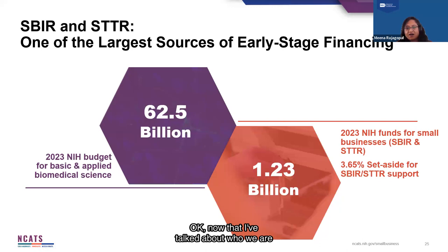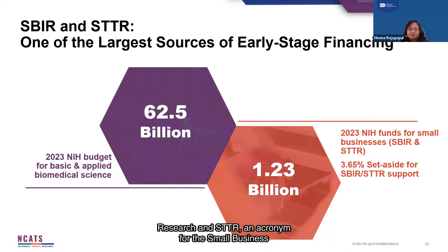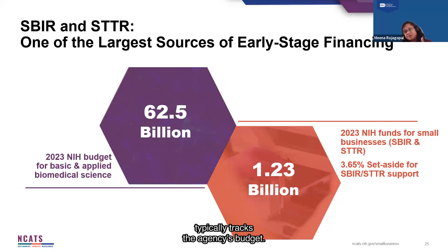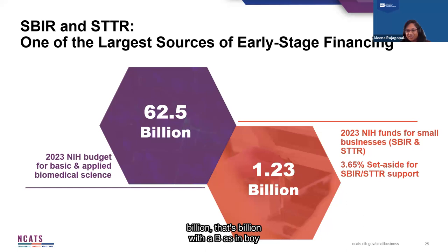Now I will dive into the Small Business Program. SBIR stands for the Small Business Innovation Research, and STTR is an acronym for the Small Business Technology Transfer Research — both are called America's SEED Fund. It is a congressionally mandated program and is one of the largest sources of early-stage funding available to eligible US-based small businesses. A number of agencies participate in this program, including the FDA and the CDC. At NIH, the budget totals to about $1.2 billion — that's billion with a B — shared among the participating institutes.